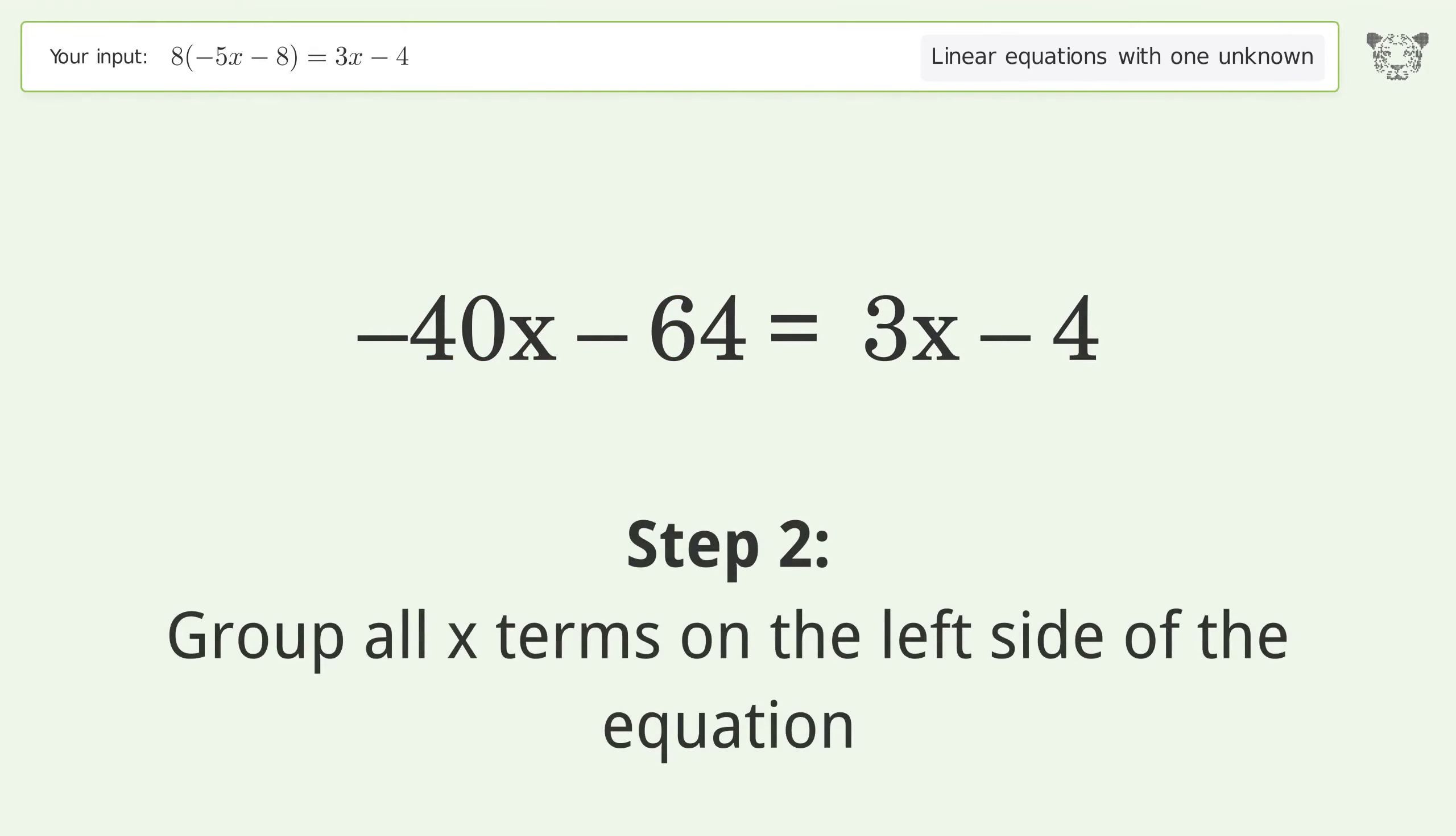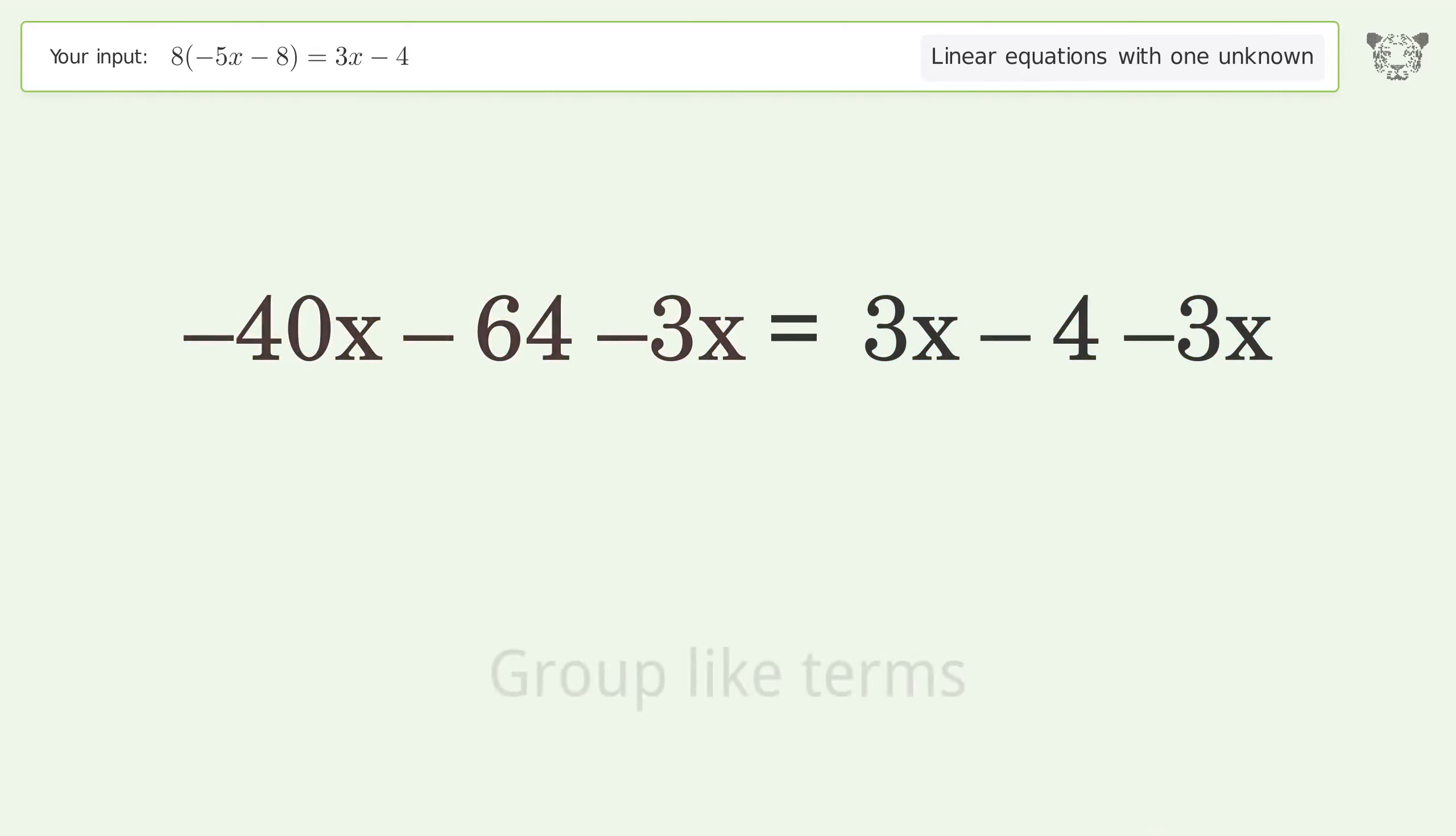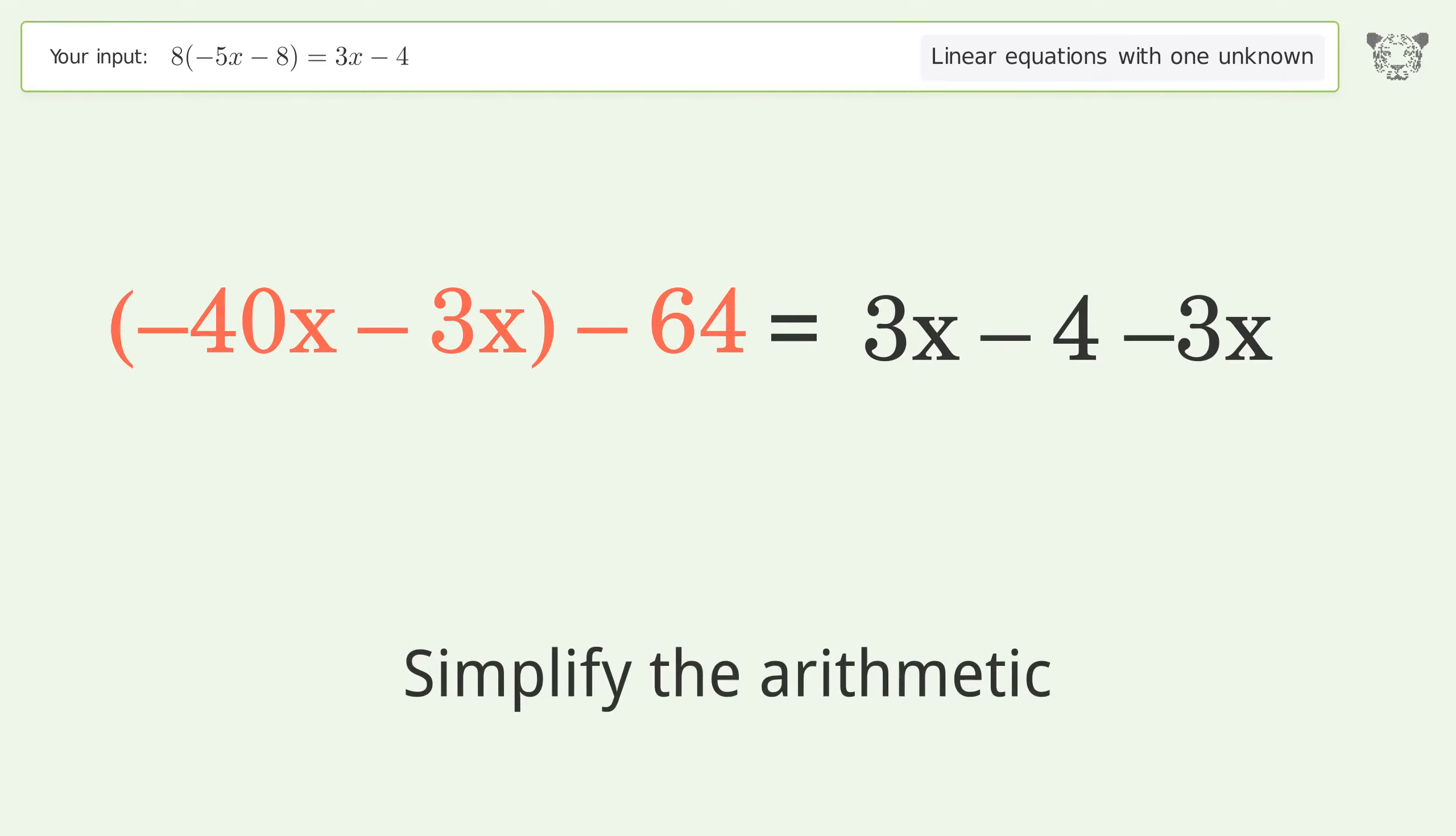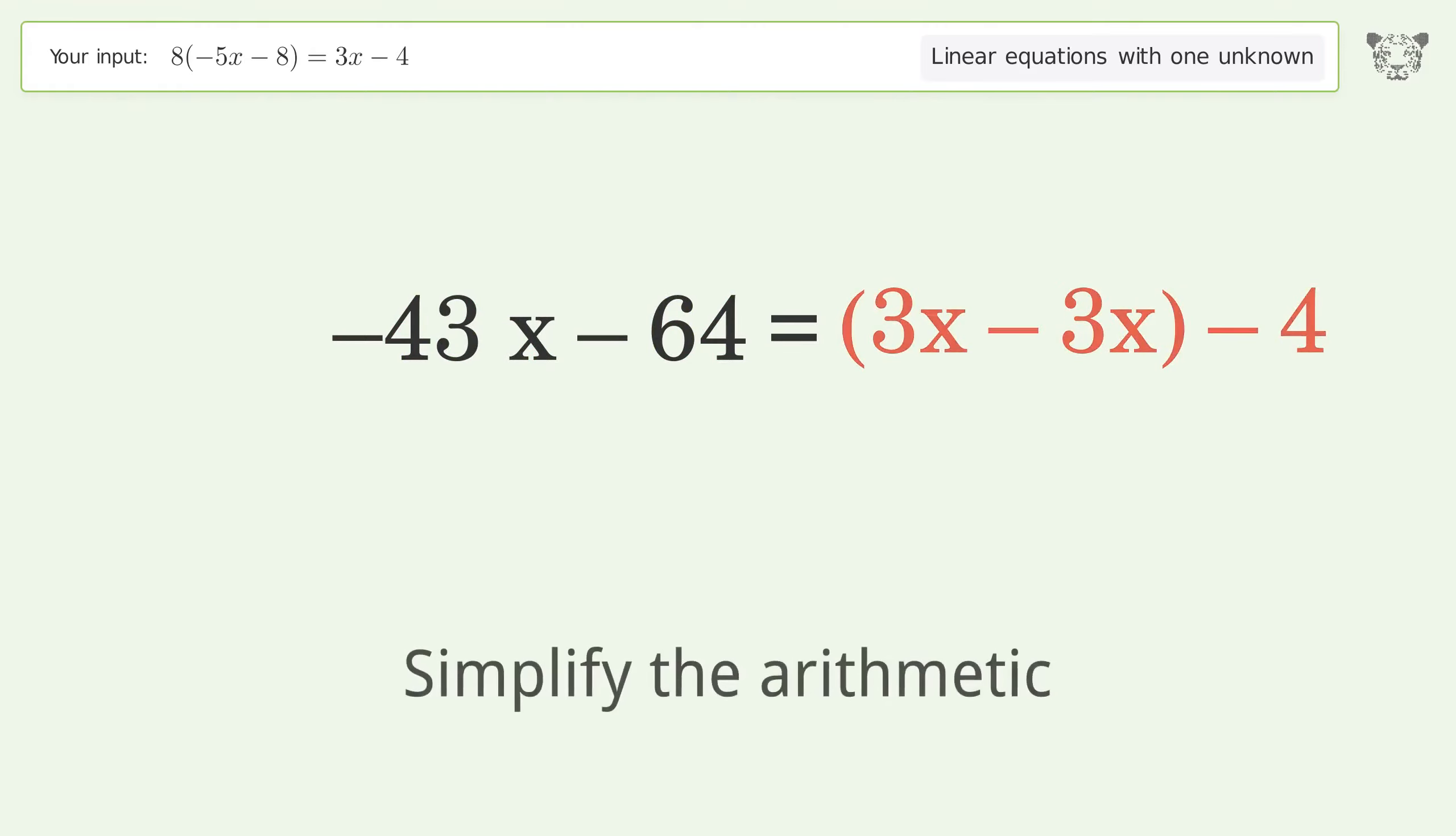Group all x terms on the left side of the equation. Subtract 3x from both sides. Group like terms. Simplify the arithmetic. Group like terms. Simplify the arithmetic.